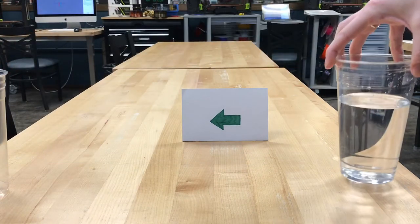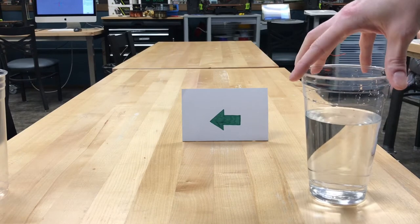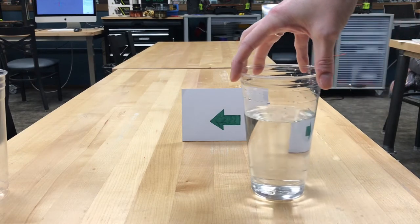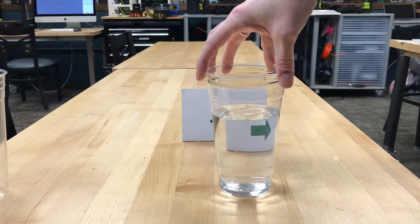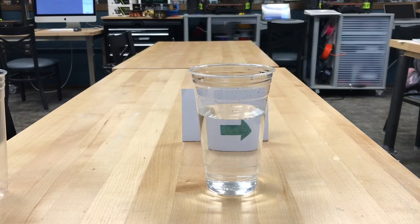I am now going to take this glass filled with water and pass it in front of the arrow. But when I do that, the arrow looks like it has changed direction.